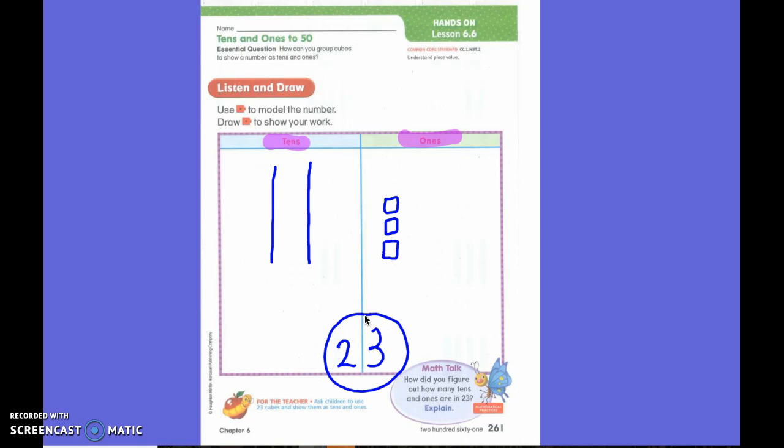So what I did for first grade was I drew my picture and then I checked myself by writing the number. What number was I looking for? 23. And you are exactly right. I drew 23 and I checked it from my picture to my number. Okay?